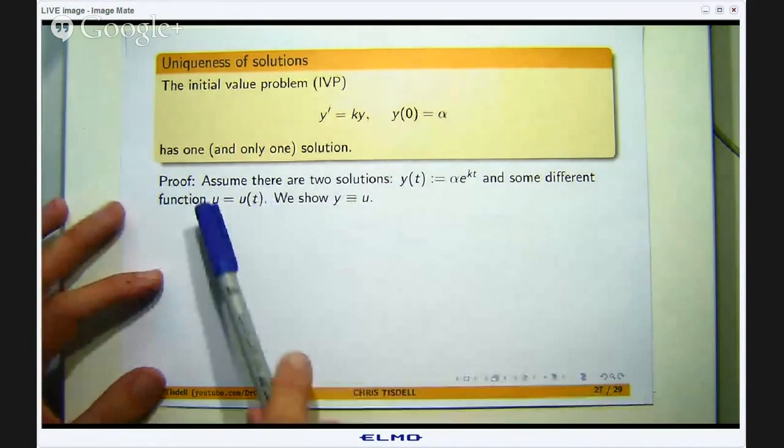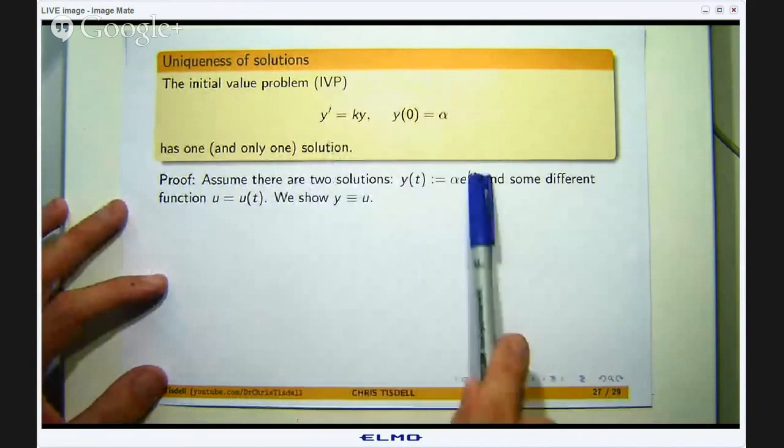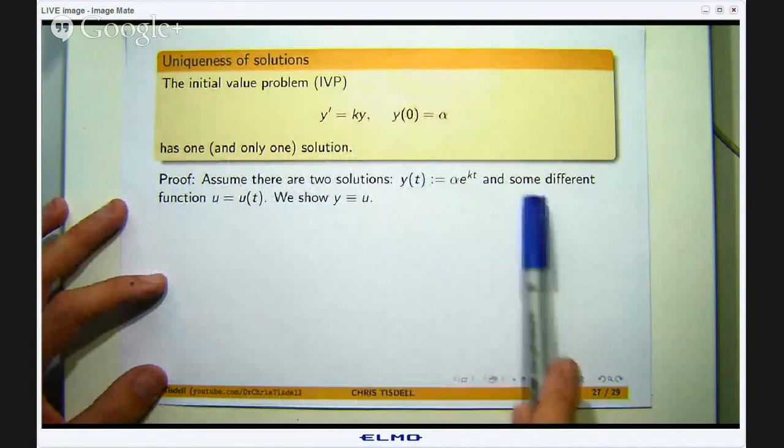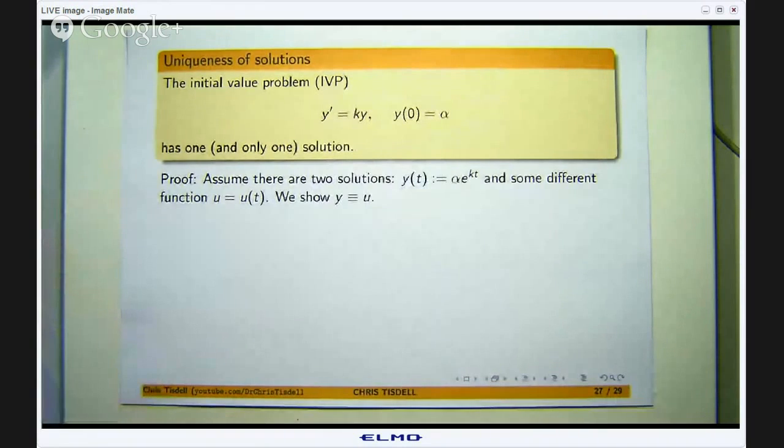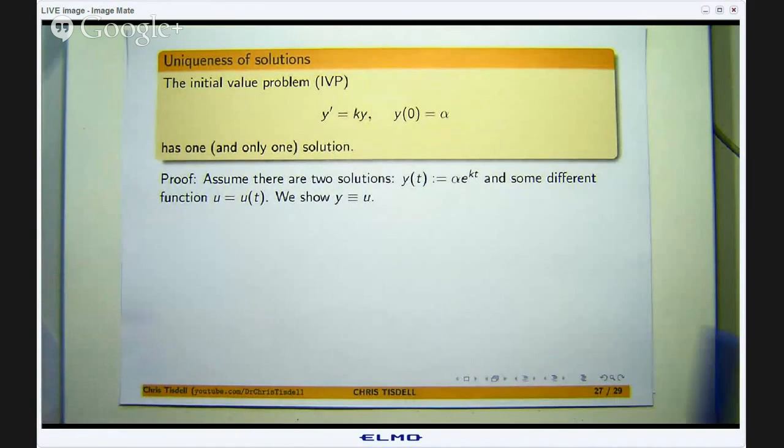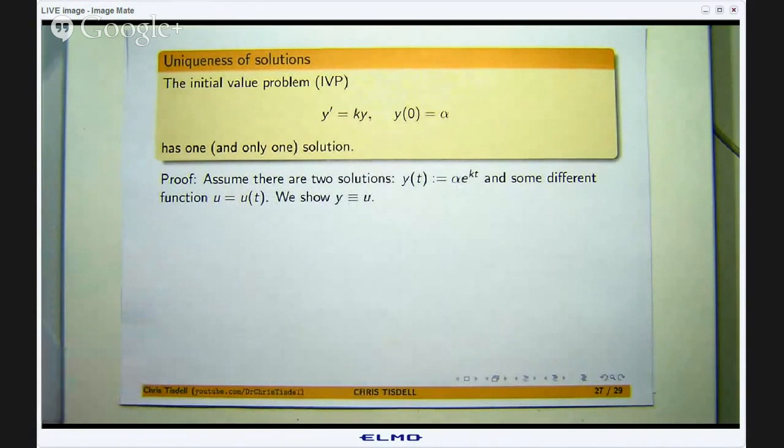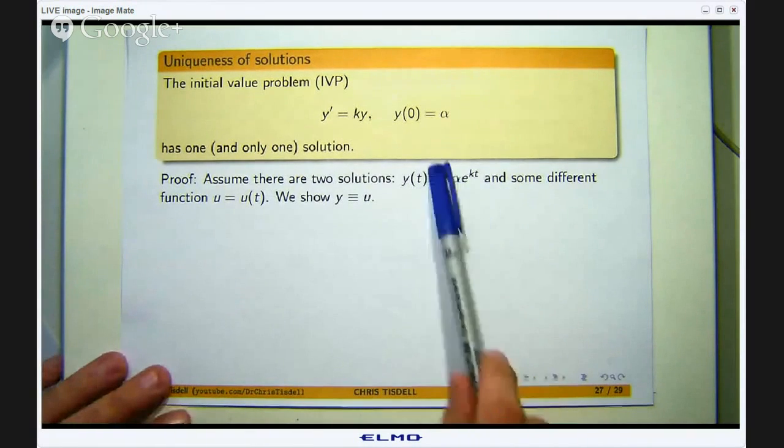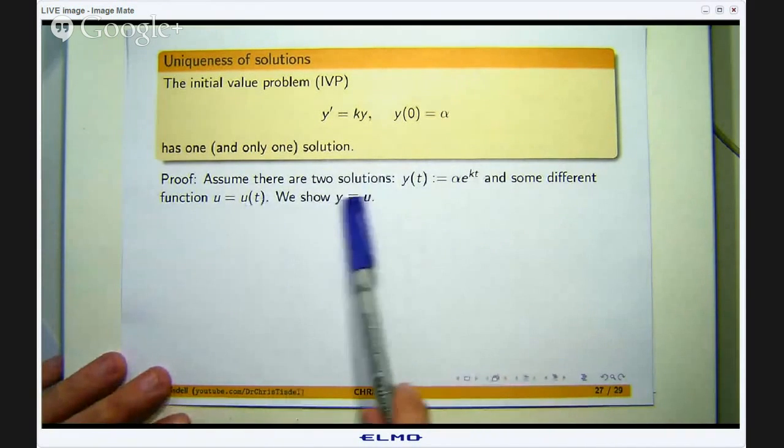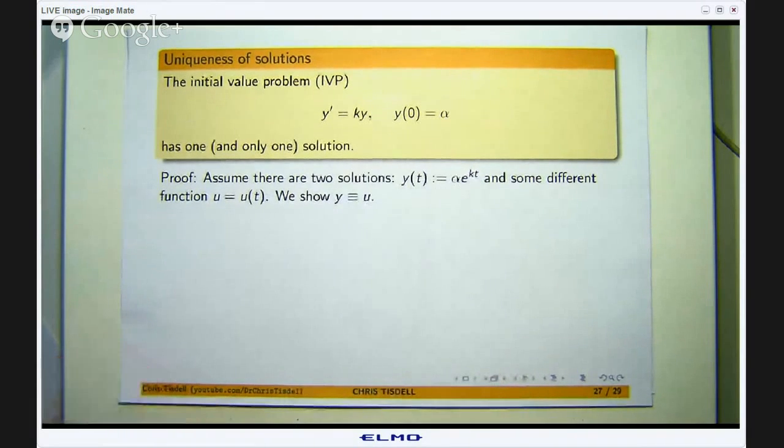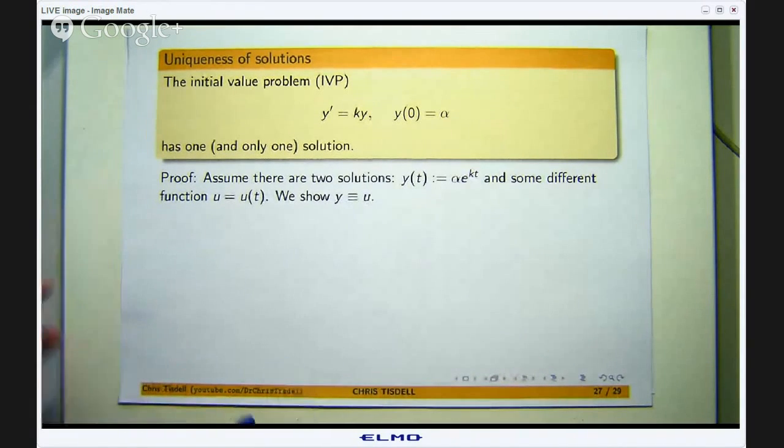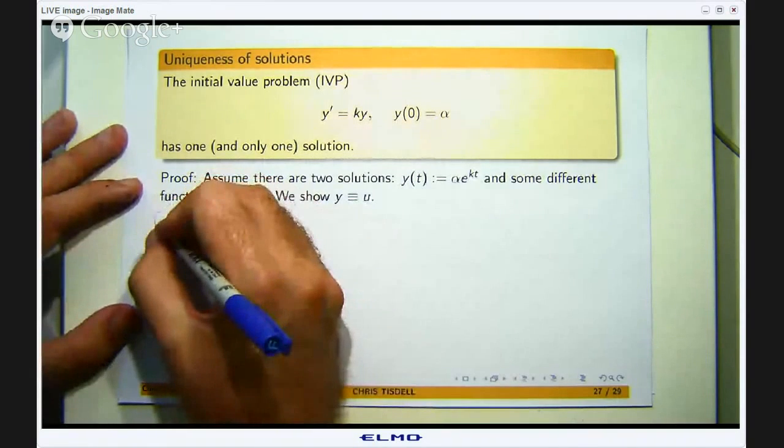So we are going to assume that there are two solutions to this problem. The solution that we have just verified and some different function, u. Now it is going to turn out that this function and this function are identically equal to each other. They are one and the same function. What this means is that if two solutions exist, well they have got to be the same. In other words this is the only solution.